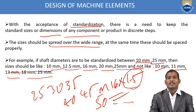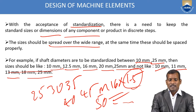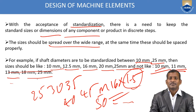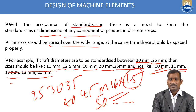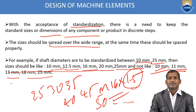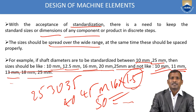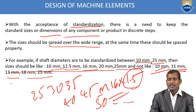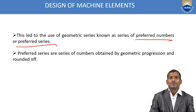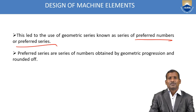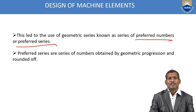As shown in the previous slide, the shaft diameters are standardized between 10 and 25 mm as: 10, 12.5, 16, 20, 25. Why not take 10, 11, 13 like this? There is a method to follow — a geometric series, specifically geometric progression with rounding off. The preferred series are a series of numbers obtained by geometric progression and rounded off.